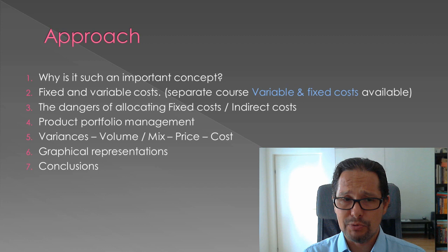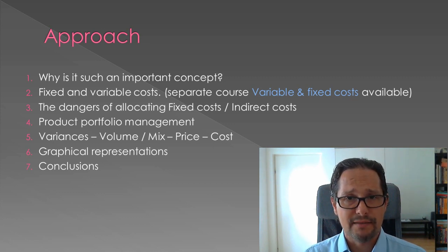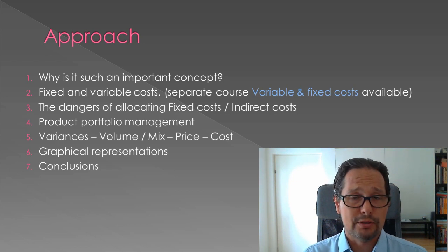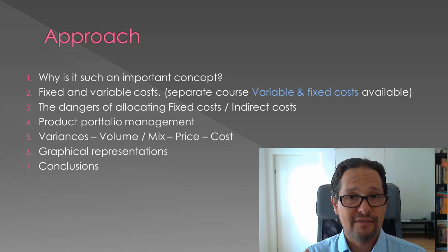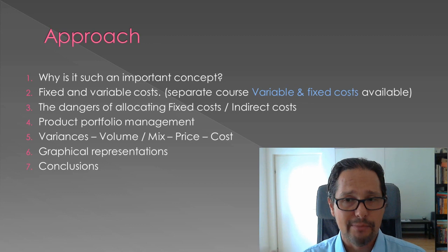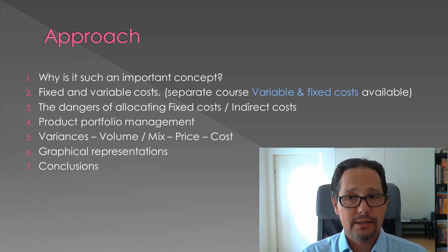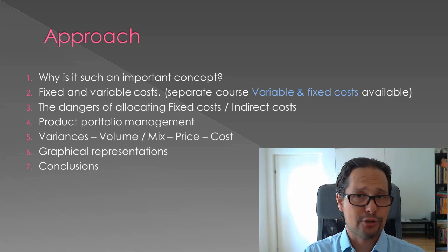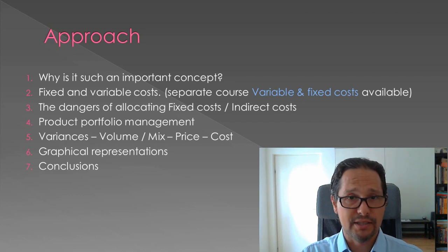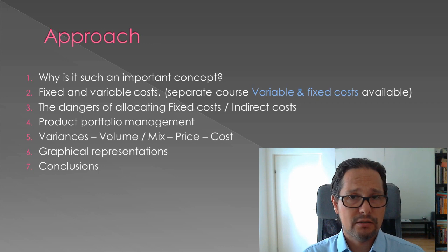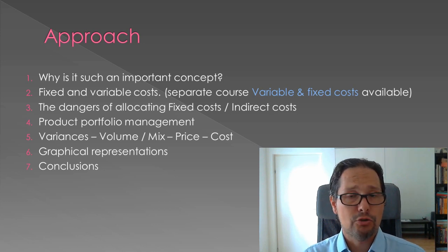Another topic in the course is product portfolio management — removing unprofitable products and adding new ones. We also cover pricing structure: how to calculate prices for products and services, and why it's recommended not to use a full allocation of fixed and indirect costs. Then we talk about variances, focusing on elements such as volume, mix, price, and cost — always comparing gross contribution between periods, whether month-on-month, year-on-year, or actual versus budget or forecast.